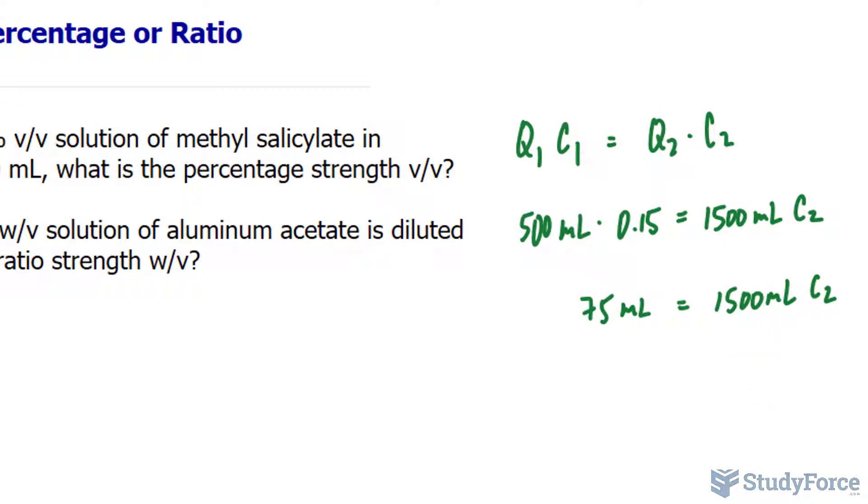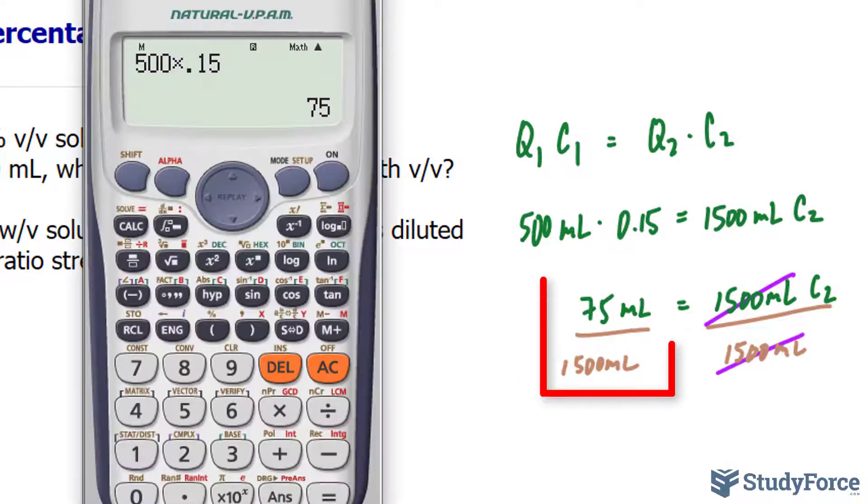The right side of the equation remains the way it is. Then we divide both sides by 1500. This is basic algebra here, because by dividing both sides by 1500, this value and that value cancel out, leaving you only with C sub 2 on the right side. So we have this value divided by 1500, and that makes 0.05. Multiply that by 100%, that's 5%.